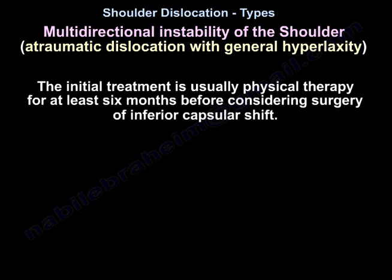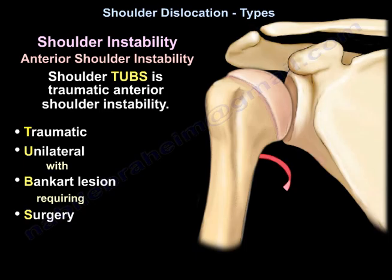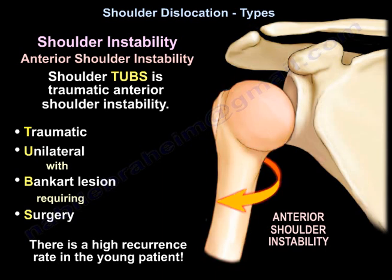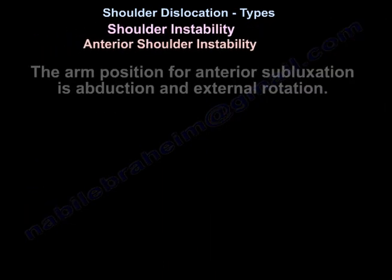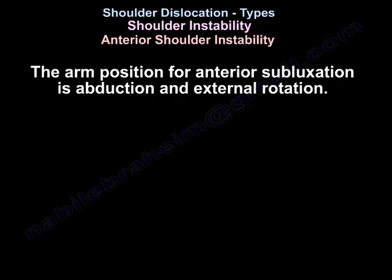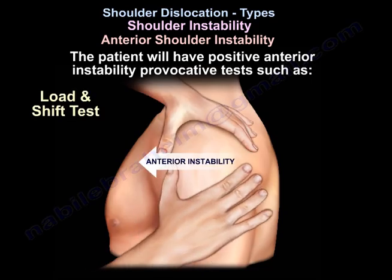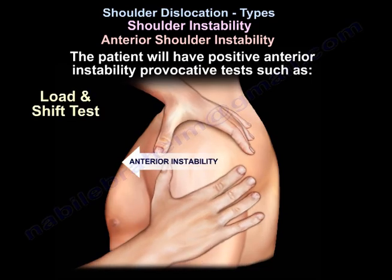The initial treatment for multidirectional instability is physiotherapy for at least six months before considering surgery such as inferior capsular shift. TUBS is traumatic anterior shoulder instability — traumatic, unilateral, with Bankart lesion, requiring surgery. There is a high recurrence rate in the young patient. The arm position for anterior subluxation is abduction and external rotation, and the patient will have positive anterior instability provocative tests such as the load and shift test.